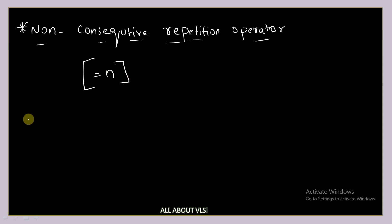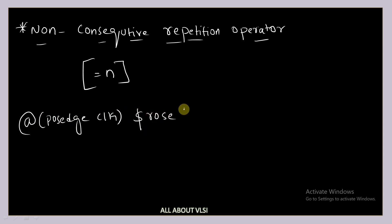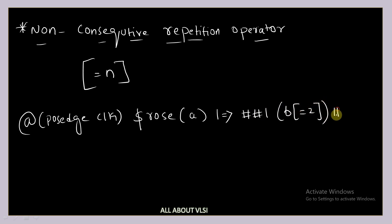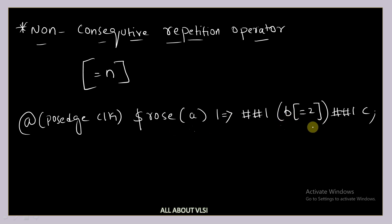Let us see one requirement: at the positive edge of clock, dollar-rose of a, non-overlapping implication operator '|=>', hash 1, b with non-consecutive repetition operator '=2', hash-hash 1, c. We have three signals a, b, and c. This means if there is a positive transition in a, then after two cycles, b should be high for two cycles — and it can be high consecutively or non-consecutively.